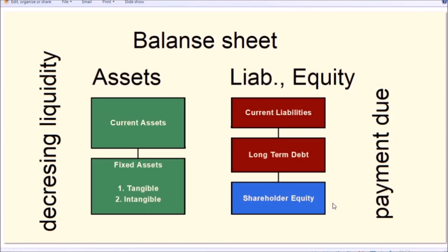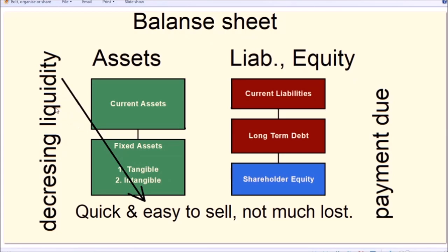Looking at the left side of the balance sheet, assets are listed in order of decreasing liquidity. At the top we have current assets — assets that are quite liquid and easy to sell. Lower down the list we have longer-term assets such as factories and trucks that aren't as easy or quick to sell. Liquidity is simply the ability of an asset to be converted into cash quickly and easily without losing too much value.